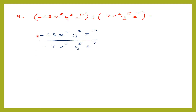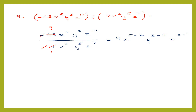First we look at the signs — minus and minus cancel. Then 63 and 7: we cancel both by 7, giving us 9. For x: x to the power of 5 divided by x squared is x to the power of 5 minus 2. Similarly, y will be y to the power of 3 minus 5, and z to the power of 10 minus 7. Because it is all division, we subtract the powers.